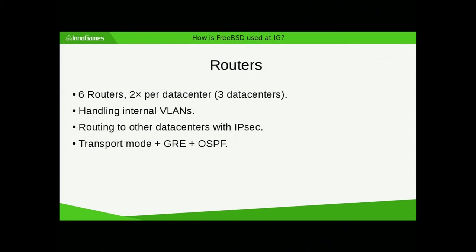We also use FreeBSD for routers. We have three data centers, giving us six routers. Routers accumulate all the internal VLANs and filter traffic between them. They also provide routing between data centers using transport mode IPsec with IPIP tunnels and OSPF running inside. Not the best choice — I would replace it with BGP, but for historical reasons.